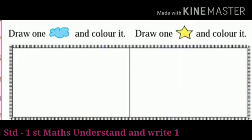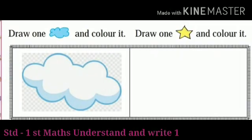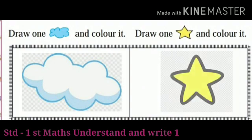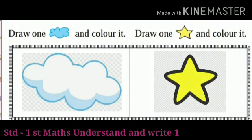Now, let's draw one cloud and one star in the given boxes. Good. There is one cloud in the first box and one star in another box. The cloud is one in number. Also, the star is one in number.